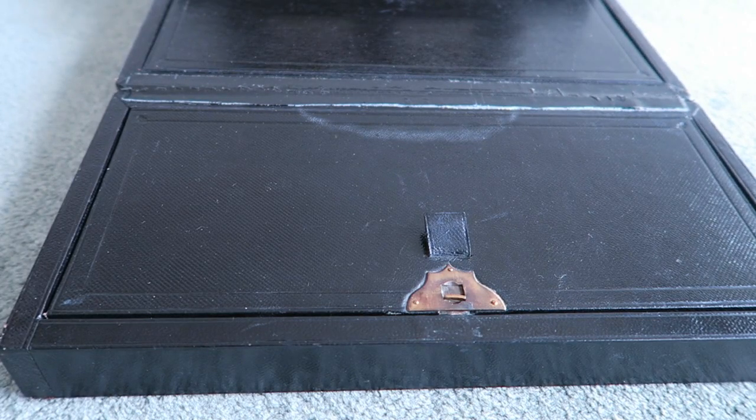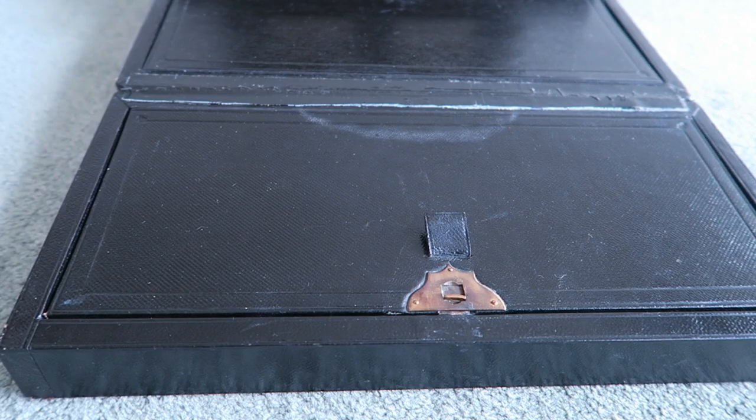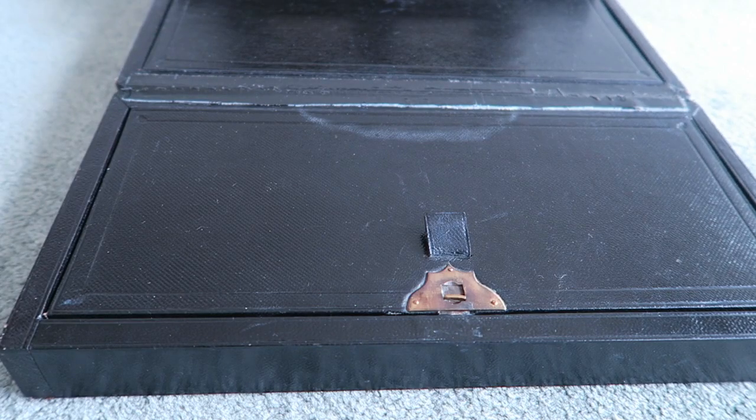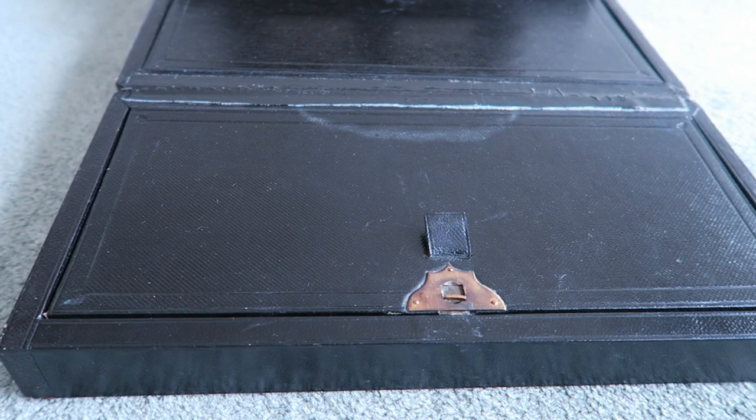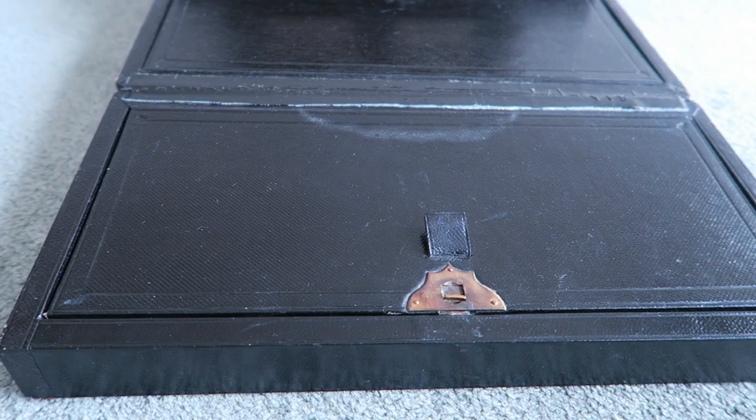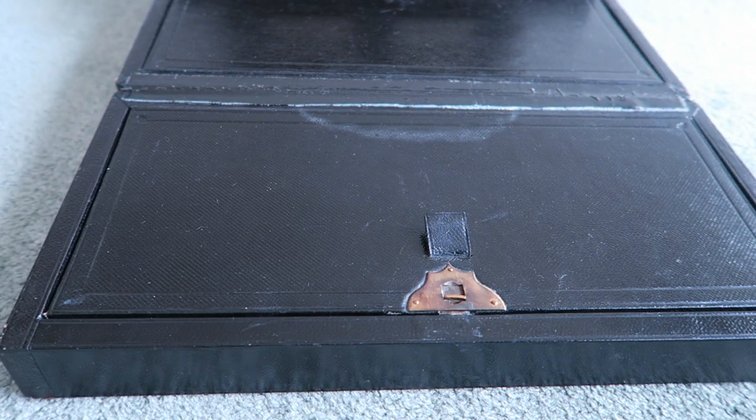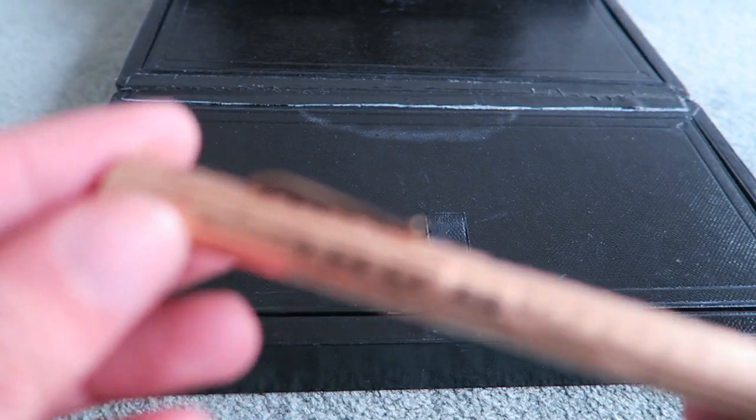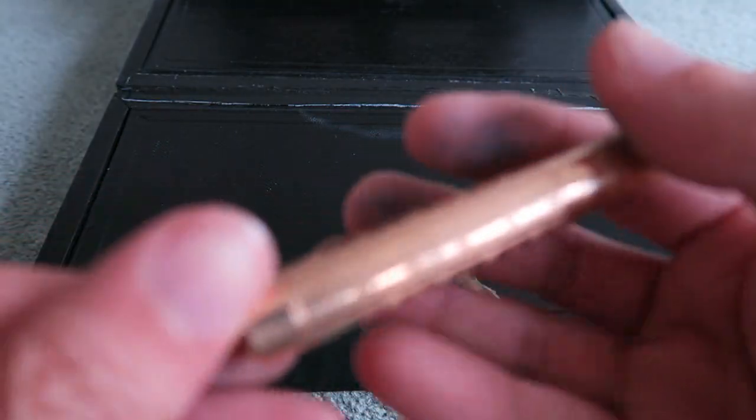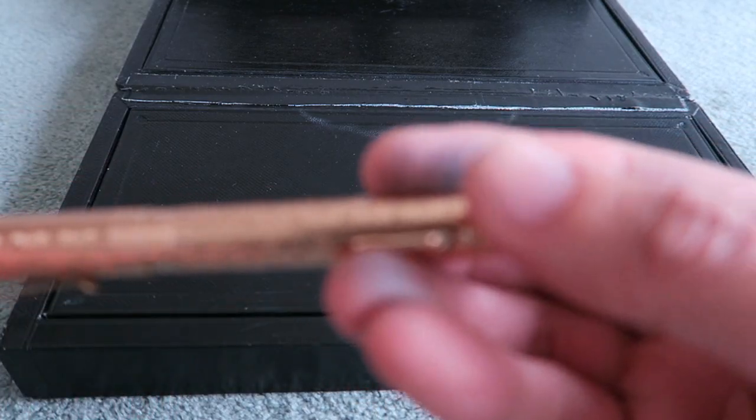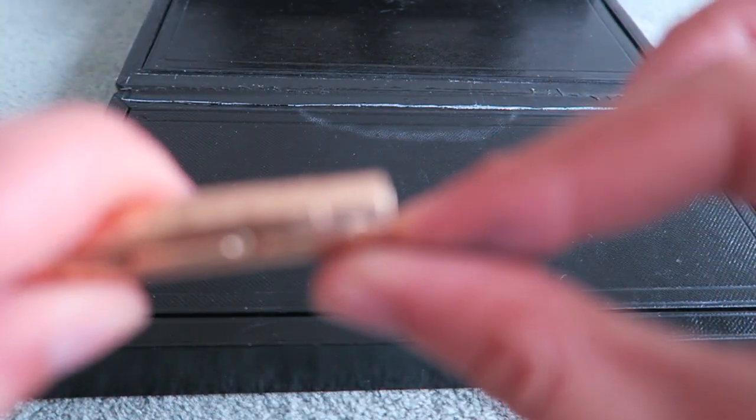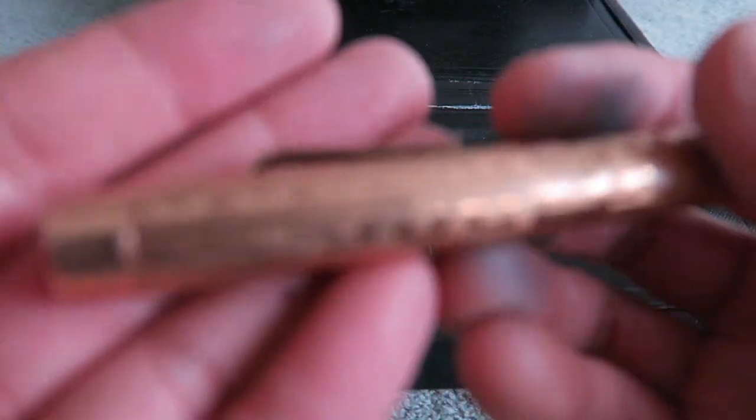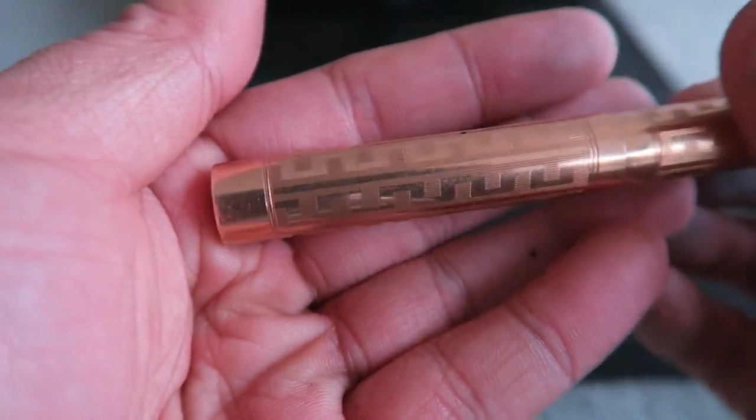So, by the 1930s, fountain pens started adapting to all kinds of changes. And one of them was the rise of Art Deco. And Art Deco was all about angles and lines and curves. And, you know, you have pens like this and it's really cute, but it's really angular. You know, it's just, it stops here, it drops off, stops here, drops off. Even the Greek key decoration is very angular.